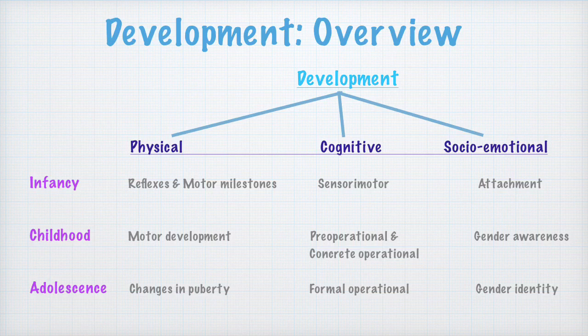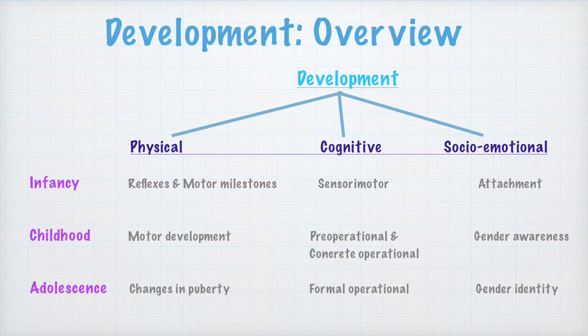As you can see in the video, development has three components. One, the physical component, which is known as physical development, also known as growth. The second is the cognitive component, and the third is the socio-emotional component. These are the three dimensions of development. A human being develops in all these areas at the same time.